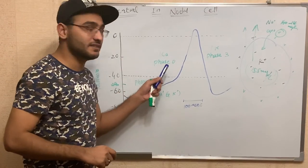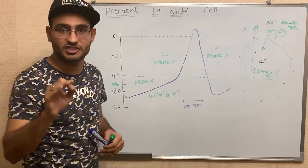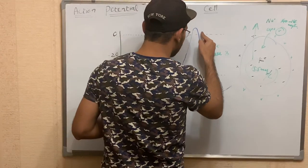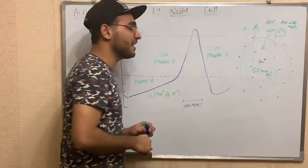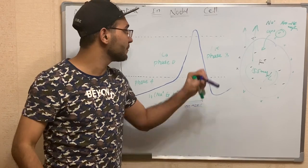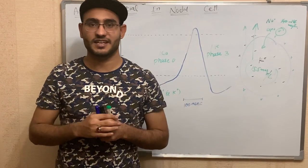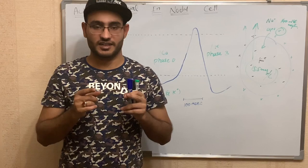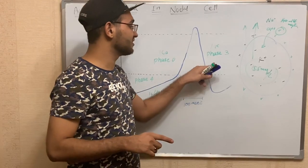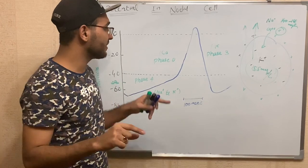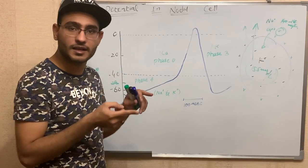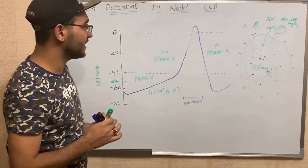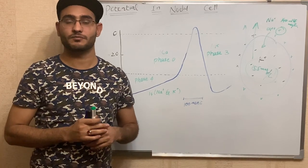Calcium ions are responsible for depolarization in the nodal cell. When depolarization occurs, the cell enters the repolarization state, caused by potassium ions. Due to leaky channels, potassium leaks out in large amounts, so repolarization converts into hyperpolarization. When hyperpolarization occurs, the funny channels open again, and the entire mechanism repeats. That was all about the action potential in the nodal cell.